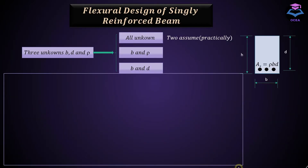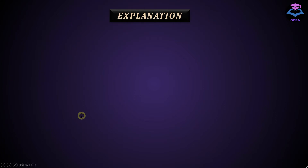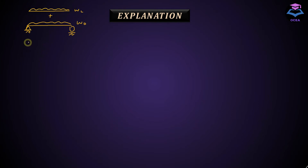When you start the flexure designing process and the cross-sectional details B, D, and rho are unknown, how do you incorporate the weight of the beam? Roughly speaking, the weight of the beam will be equal to 10 to 15% of the unfactored load that it carries. For instance, consider a simply supported beam subject to a uniform dead load WD and a uniform live load WL. The self-weight of the beam in that case would be equal to 10 to 15% of the total unfactored load WD plus WL.